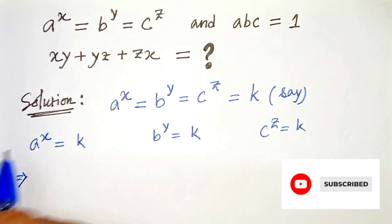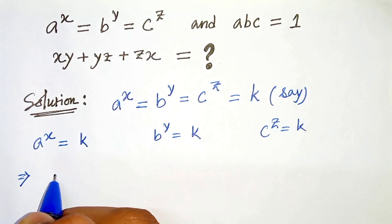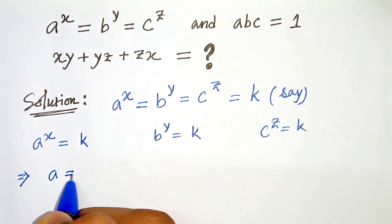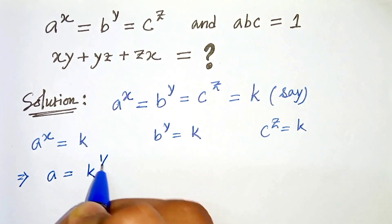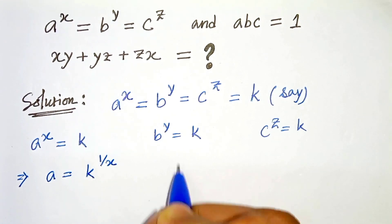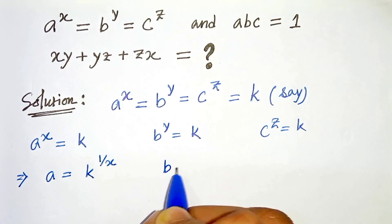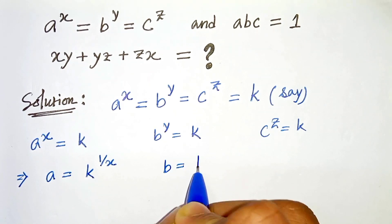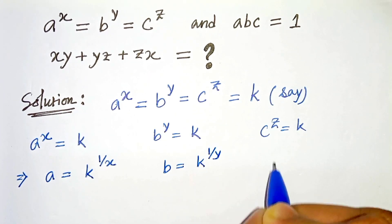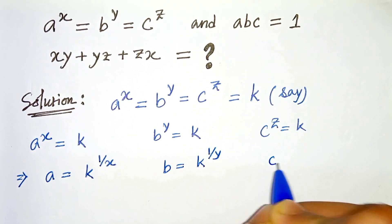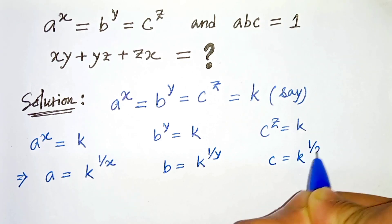Now we can write this as a equals k raised to the power 1 over x, and from this we can write b equals k raised to the power 1 over y, and c equals k raised to the power 1 over z.